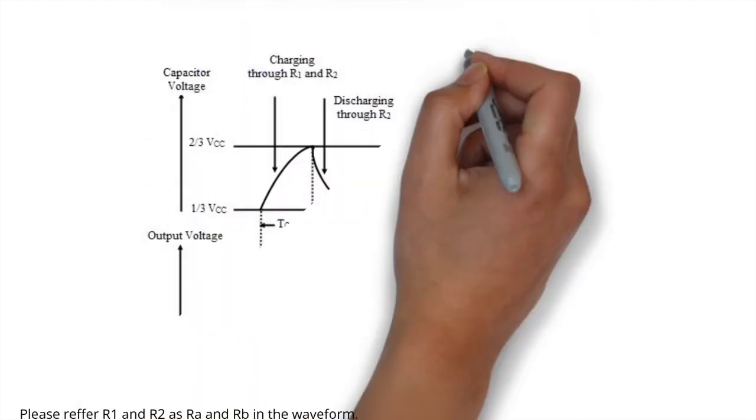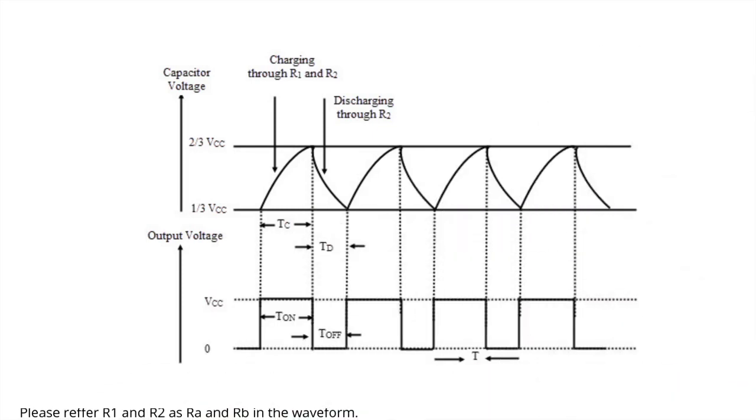As shown in the waveform of A-stable multivibrator, discharging and discharging of capacitor continues and a rectangular oscillating output wave form is generated. While capacitor is getting charged, the output of IC555 is high and while the capacitor is discharged, the output will be low. This is called A-stable mode because none of the state is stable and IC555 automatically interchange its state from high to low and low to high. This is the reason it is also called as free running multivibrator.